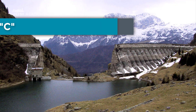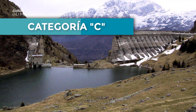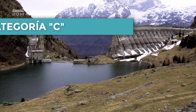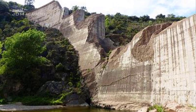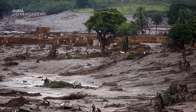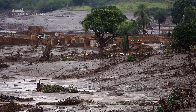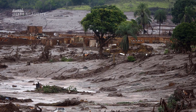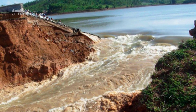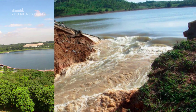Categoría C — dams whose failure or incorrect operation can cause material damage of moderate importance and only incidentally loss of human life. In all cases, this category includes all dams not included in categories A or B.